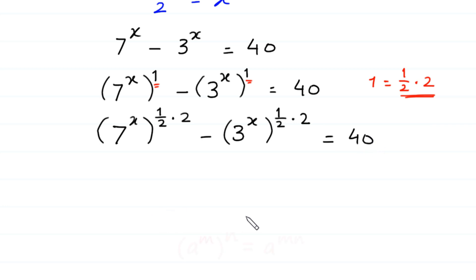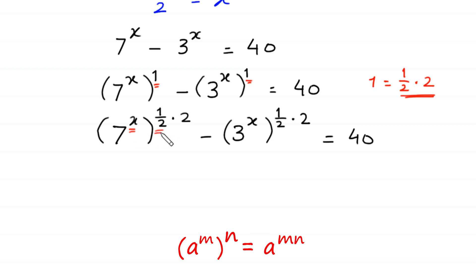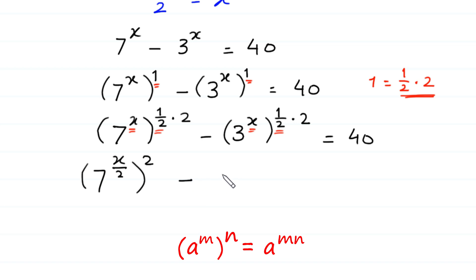According to the rule of exponents, a to the power m whole to the power n equals a to the power m times n. We multiply the inner power x by 1 over 2 in each term, giving 7 to the power x over 2, whole squared, minus 3 to the power x over 2, whole squared, is equal to 40.